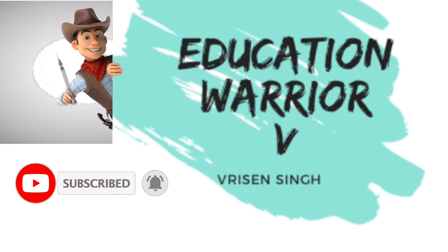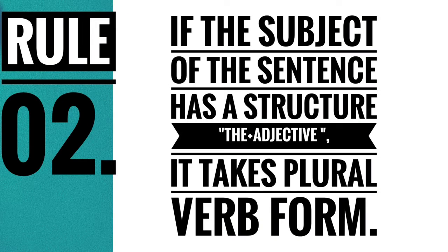The second rule says: if the subject of the sentence has the structure 'the + adjective,' it always takes plural verb form. The subject means the doer of an action in the sentence, or whom we are talking about. So this formation — 'the + adjective' — always takes plural verb form.